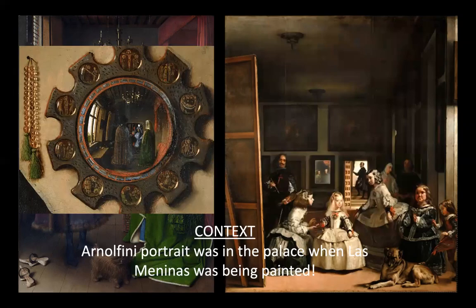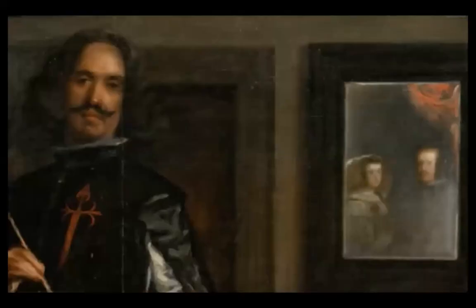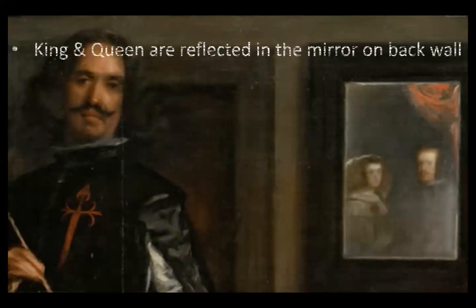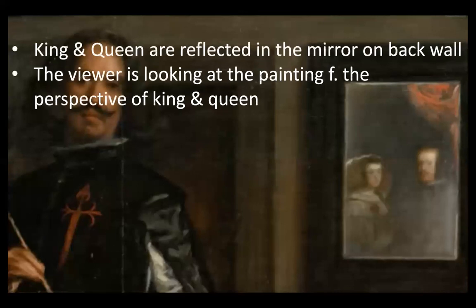This makes sense because that's who this was painted for — that's the audience. We also have an artist painting himself along with the king and the queen, again promoting the status of the artist. So we need to add to our notes: the king and queen are reflected in the mirror on the back wall. Therefore, the viewer is looking at the painting from the perspective of the king and the queen. That is the interpretation that art historians have come to based on the clues we've discussed.